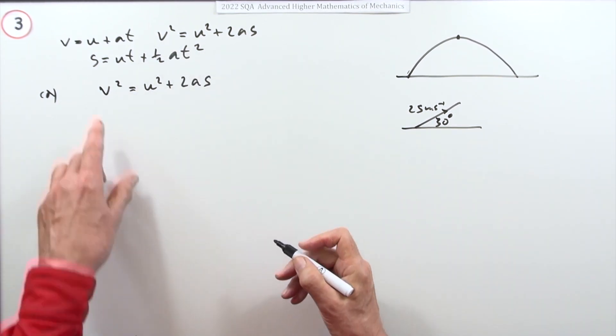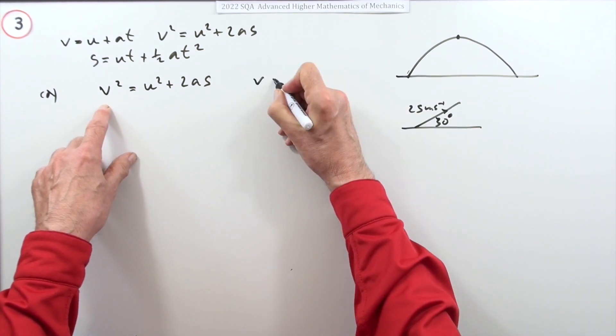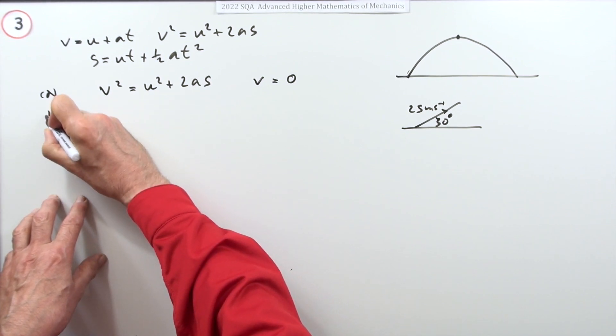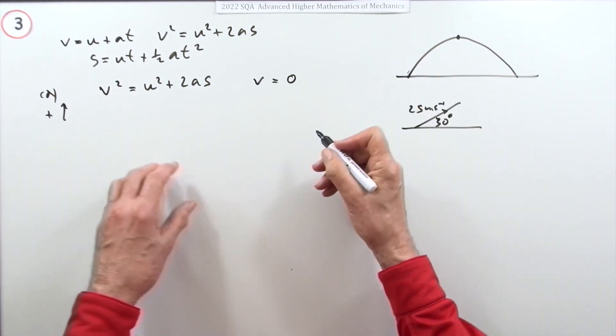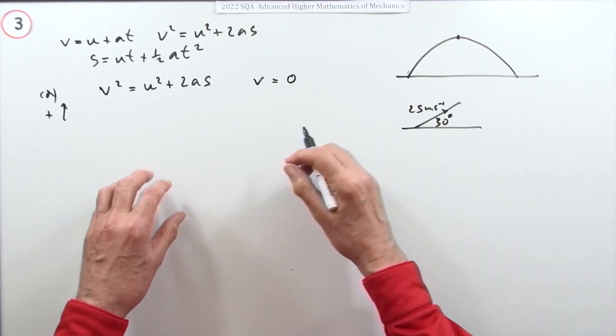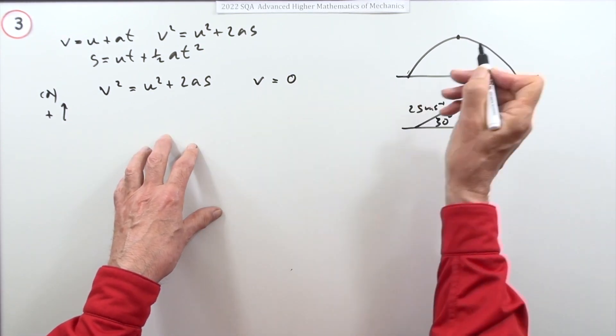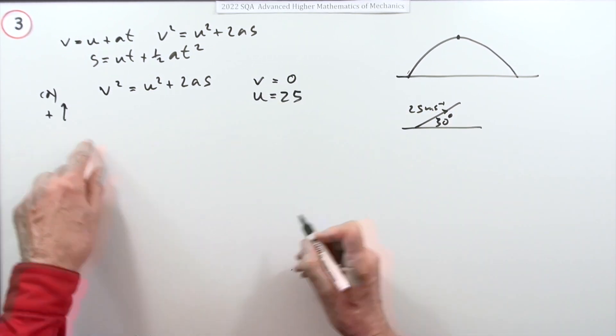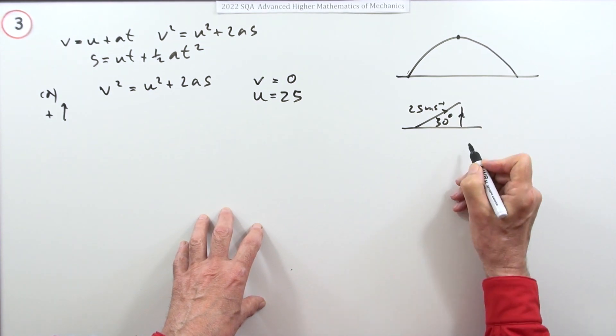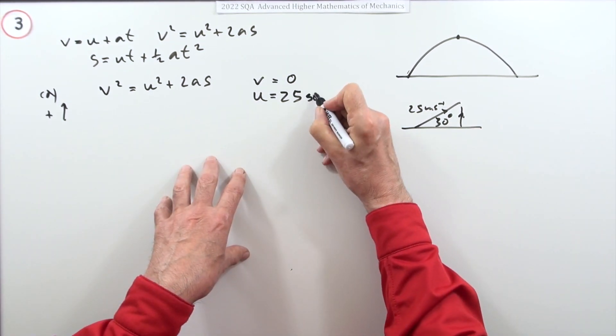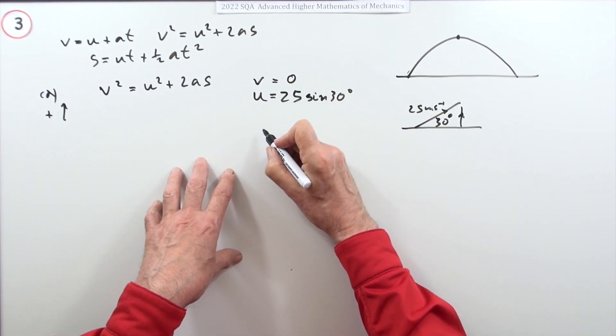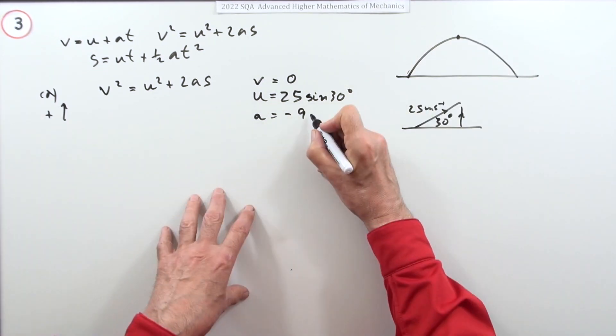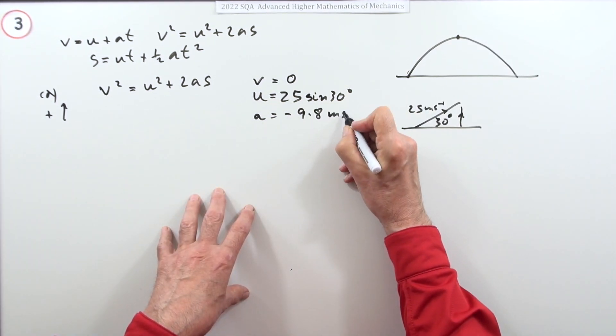Final velocity is zero at the top in this direction. Taking that direction as positive, the final speed would be zero. The initial speed isn't 25 in that direction, it's this part here which is the sine, so it's 25 sine 30. Well that's just a half, so that's 12.5. And I know the acceleration, that's negative 9.8 meters per second squared because it's going down the way against this direction.